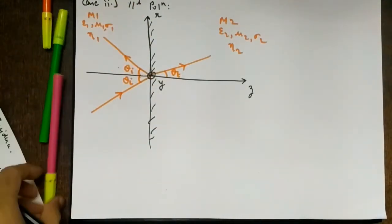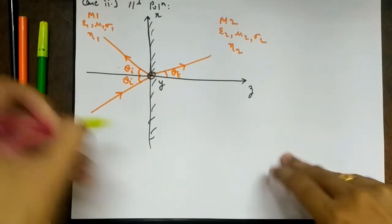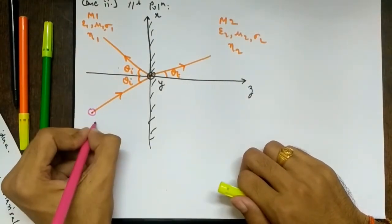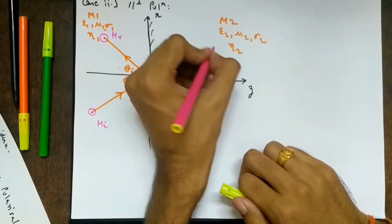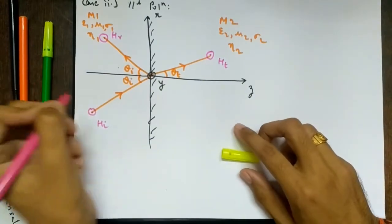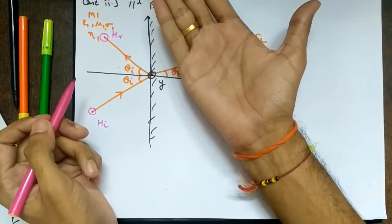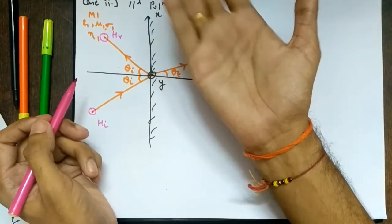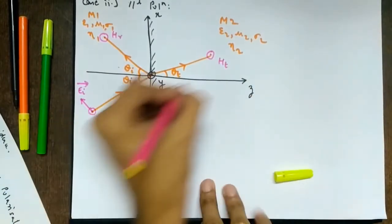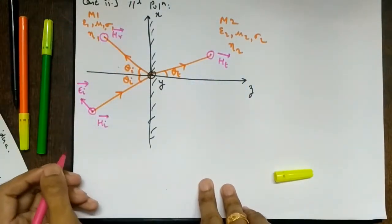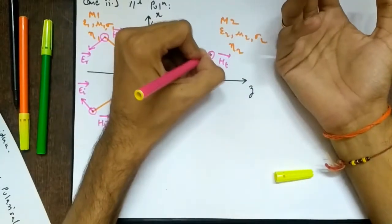Parallel polarization means the electric field is in the plane of incidence, so the magnetic field is perpendicular to the plane of incidence. Using the right-hand rule and Poynting's theorem — curl fingers from E to H in the direction of travel — we identify Hᵢ, Hᵣ, and Hₜ perpendicular to the plane, and determine the directions of Eᵢ, Eᵣ, and Eₜ accordingly.